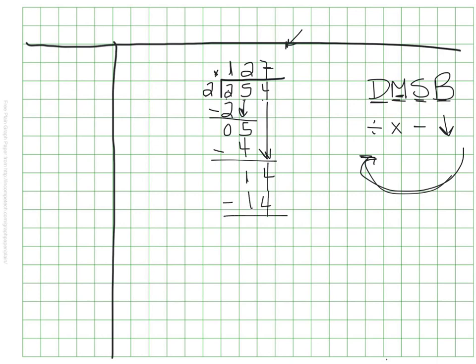My next step is subtract. When I subtract that, there's nothing left. My final step would be to bring down, but there's nothing left for me to bring down anymore. There's no more numbers. I have nothing left over down here. I have nothing left to bring down, so that means I'm done. My quotient is 127. Now that would have been a lot if I had been counting by 2s all the way up to 254.